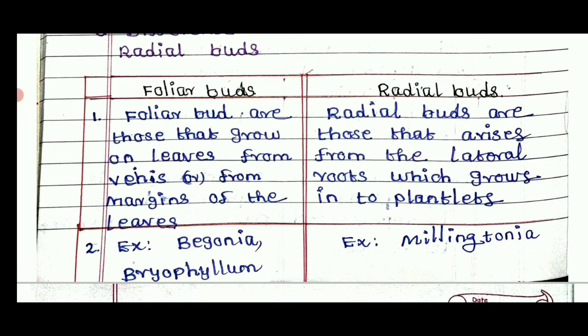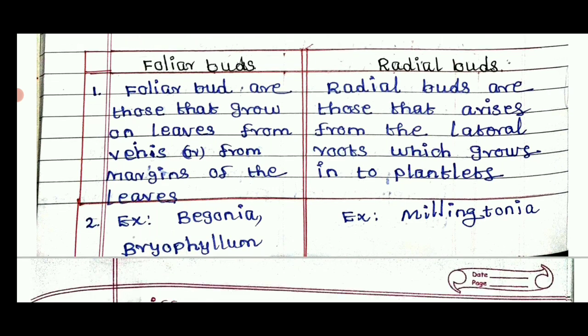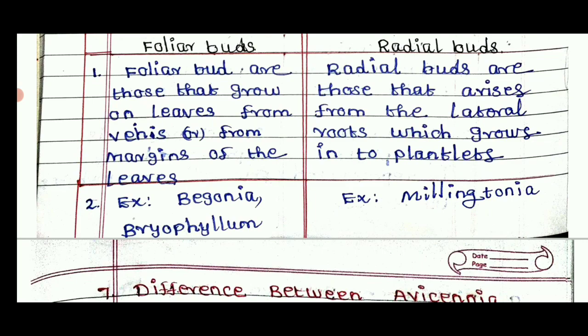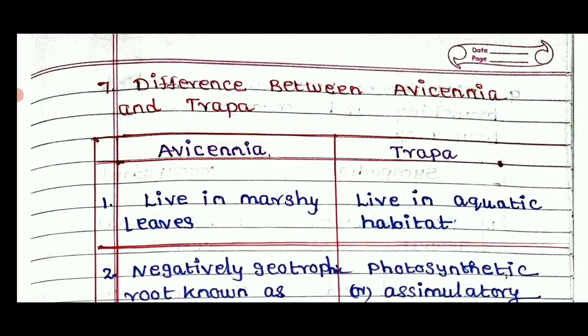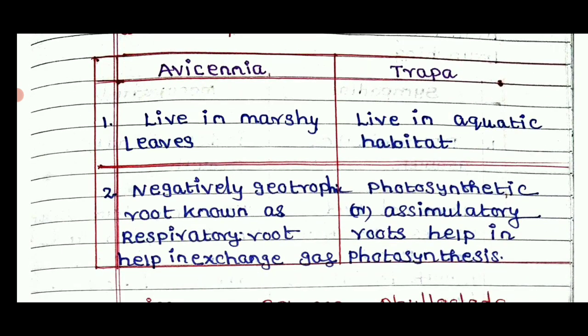Adventitious buds are those that grow from the margins of the leaves. Radical buds are those that arise from the lateral roots, which grow into plantlets — for example, Bryophyllum and Millingtonia. The difference between Avicennia and Trapa: Avicennia has marshy or aquatic habitat with negatively geotropic respiratory roots for gas exchange, while Trapa has photosynthetic and assimilatory roots.